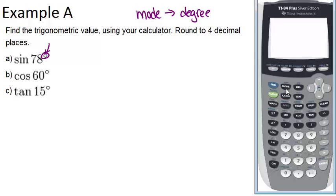So once you know you're in the right mode, if we want to figure out sine of 78, all you need to do is type in sine and then 78 and click enter, and we get our answer. And in this case, it is to four decimal places, 0.9781.